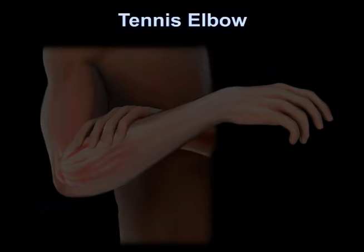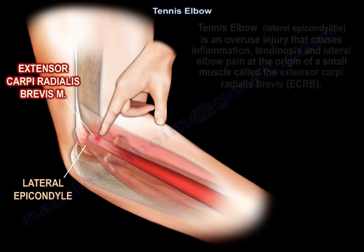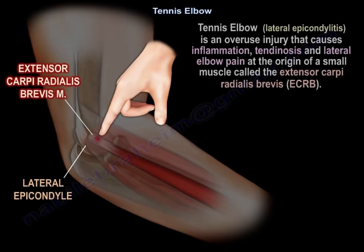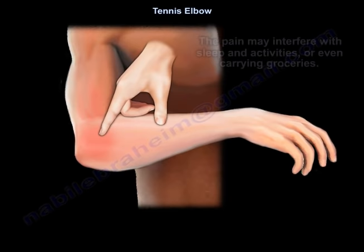Tennis elbow, also called lateral epicondylitis, is an overuse injury that causes inflammation, tendinosis, and lateral elbow pain at the origin of a small muscle called the extensor carpi radialis brevis. This is the location of the pain on the outer side of the elbow.